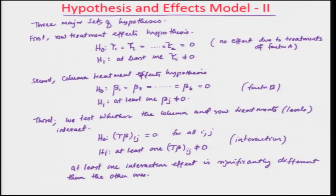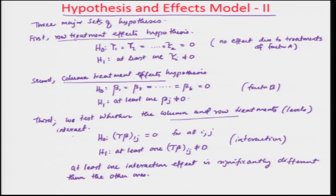Looking at the screen, we talked about three major sets of hypotheses: the row treatment effects denoted by tau, the column treatment effects denoted by beta, and the interaction levels denoted by tau-beta. We talked about all three hypotheses, and now we are going to see how to do the statistical analysis of the same.